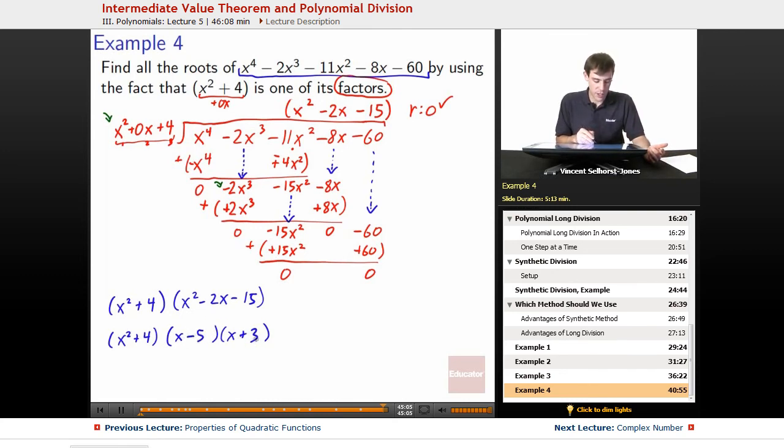We check that. x^2 + 3x - 5x. -2x. -5 times 3. -15. Great.